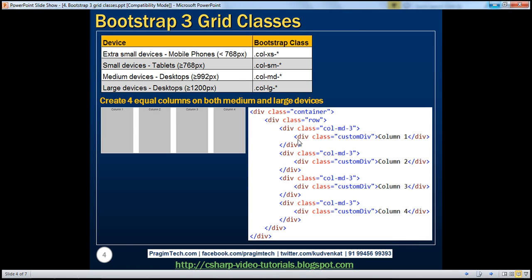This is going to give us four equal columns not only on a medium device but also on a large device. Because remember, grid classes of a given screen size not only apply to that screen size but also larger screen sizes unless we have another declaration overriding it. Since we are not overriding this with a col-lg-* class, we are going to get four equal columns on a larger device as well.